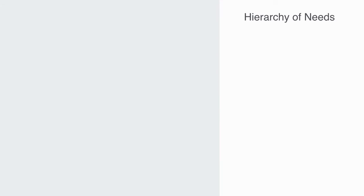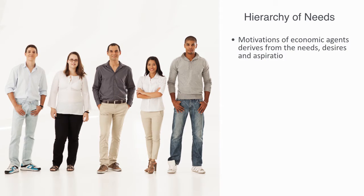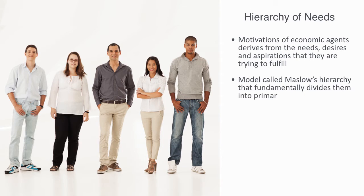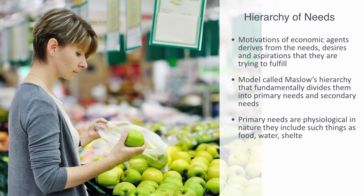The motivation of economic agents derives from the needs, desires, and aspirations that they are trying to fulfill. These different types of needs are typically structured through the use of a model called Maslow's hierarchy, which fundamentally divides them into primary needs and secondary needs. Primary needs are physiological in nature — they include such things as food, water, shelter, sleep, and so on.